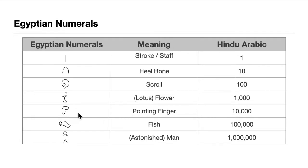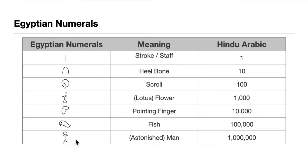We have the pointing finger, pointing to the right, and its value is 10,000. Then we have the fish — some books draw it as a regular fish, while others recognize it as a frog, tadpole, or similar — but in our book we use the fish symbol, which is equivalent to 100,000.